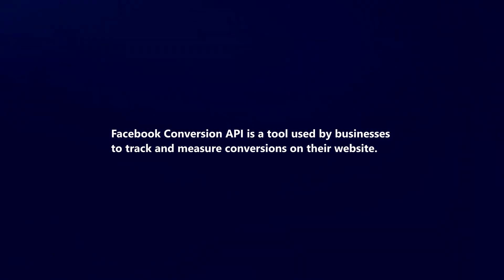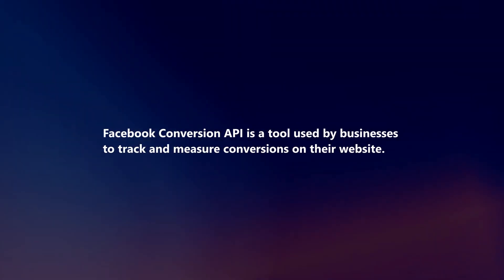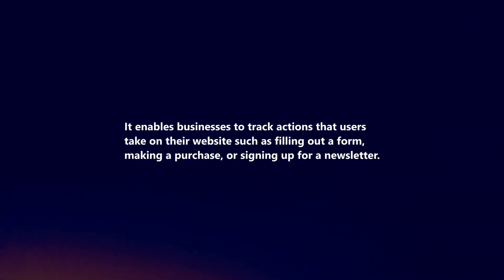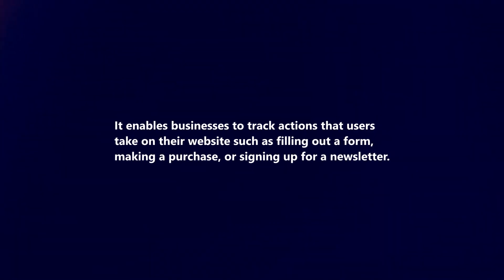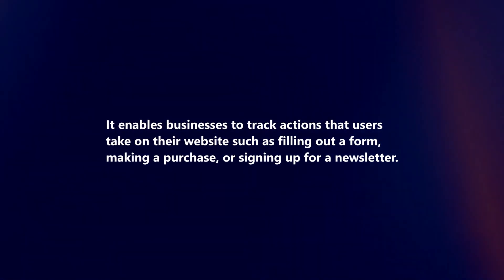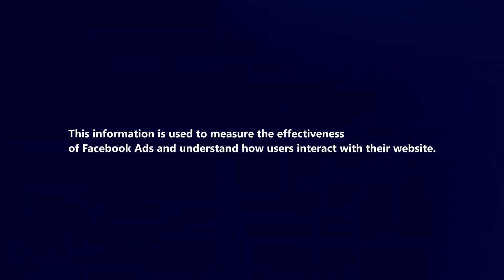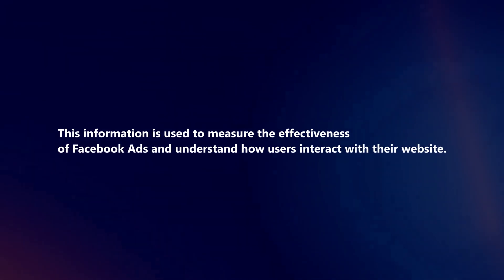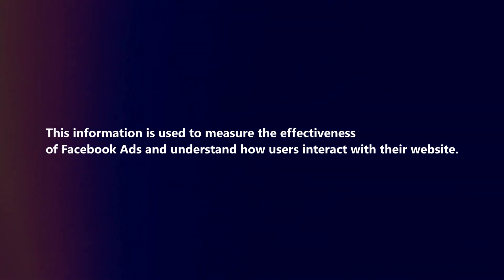Facebook Conversion API is a tool used by businesses to track and measure conversions on their website. It enables businesses to track actions that users take on their website, such as filling out a form, making a purchase, or signing up for a newsletter. This information is used to measure the effectiveness of Facebook ads and understand how users interact with their website.